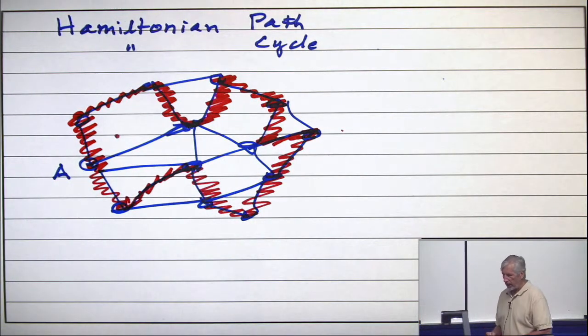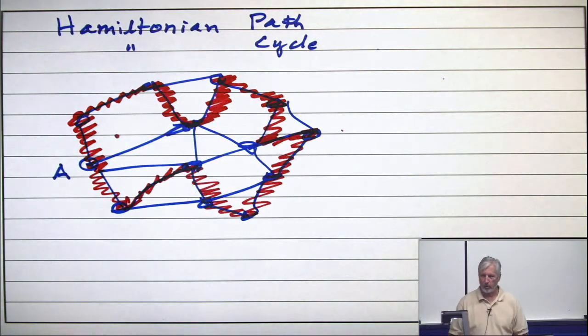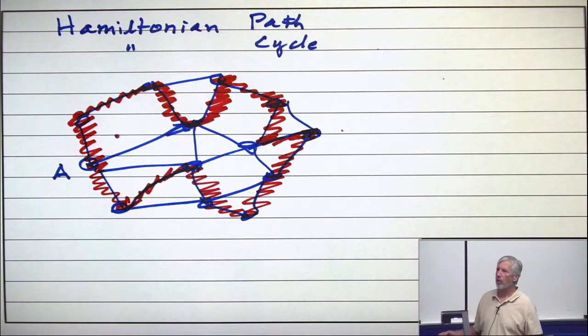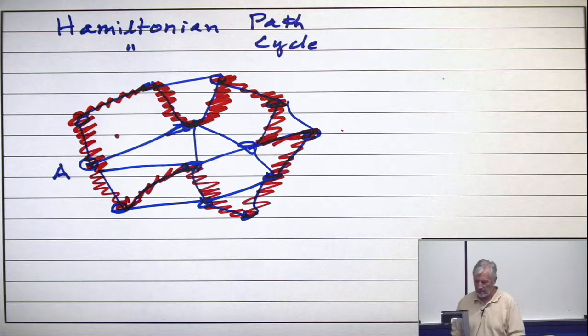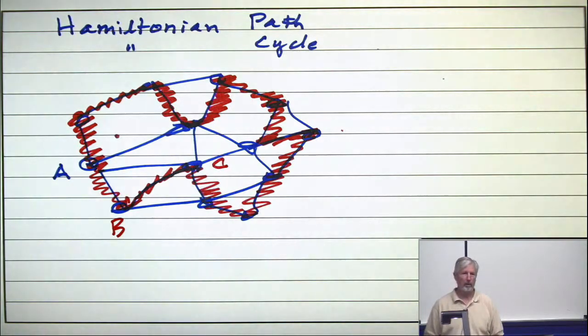And so on many of the tests, I'll have labels on these and I'll ask you provide a Hamiltonian cycle by listing the vertices in the order that you would visit them. If it's a hard one, I might even give you the first three moves. So to kind of get you started in the right direction.